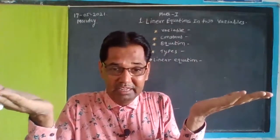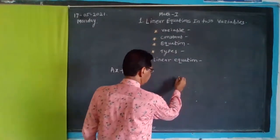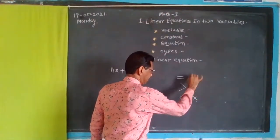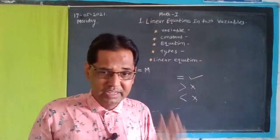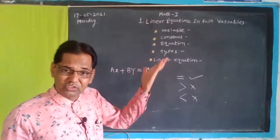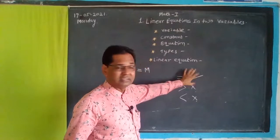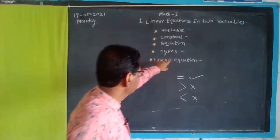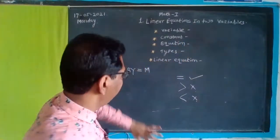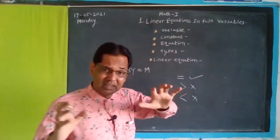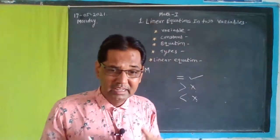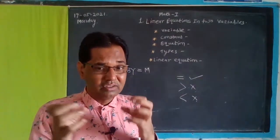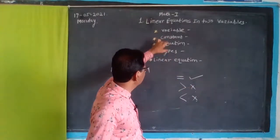Equations — when we have an equal expression, an equal expression, that is called the equation. The expression that has LHS and RHS that are equal — that is called the equation. The expression contains two sides, LHS and RHS, which are equal, and it is a combination of letters and variables.